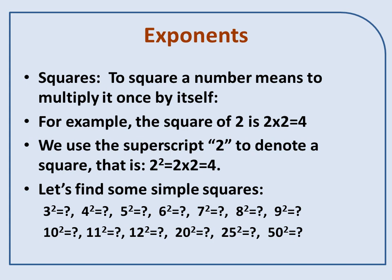Let's find some simple squares. 3 squared is 9, 5 squared is 25, 20 squared is 400, and you can do these.